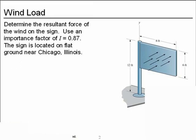So the problem we want to look at today is determine the resultant force of wind acting on the sign we have. We're going to use an importance factor of 0.87, and that comes from the ASCE 7 manual. The sign is located on flat ground, and we need to know where it's located because that affects the pressures. It will be near Chicago, Illinois.